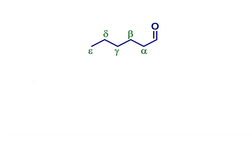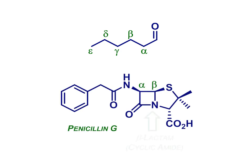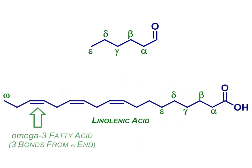For the record, this nomenclature tradition is what makes beta-lactam antibiotics like penicillin beta-lactams, because the nitrogen is attached to the beta carbon relative to the carbonyl group. And omega-3 fatty acids, omega-3, because the carbon furthest from the carbonyl group is given the Greek letter omega.